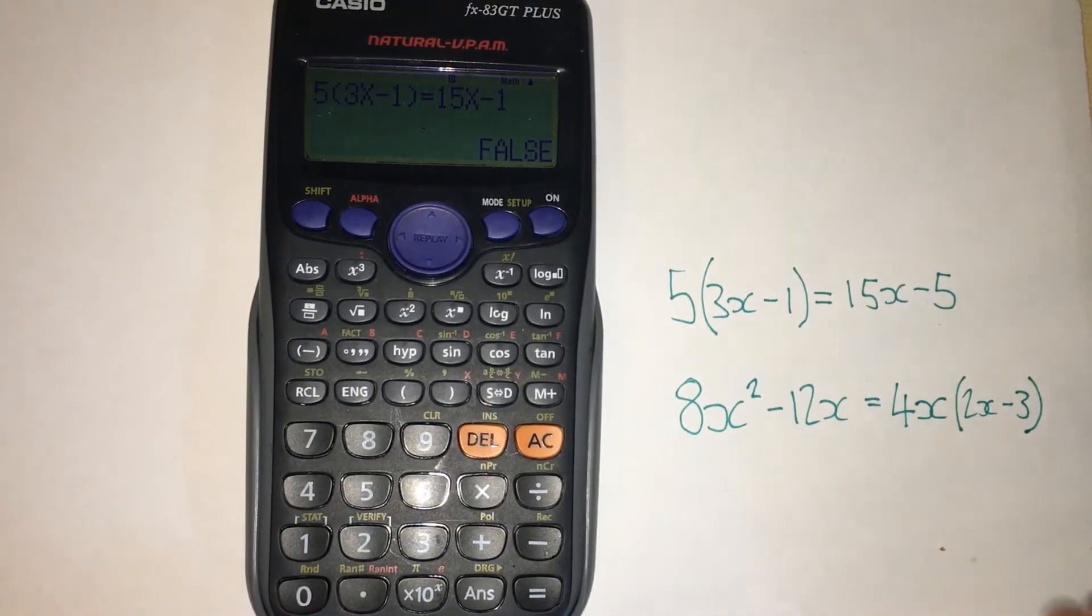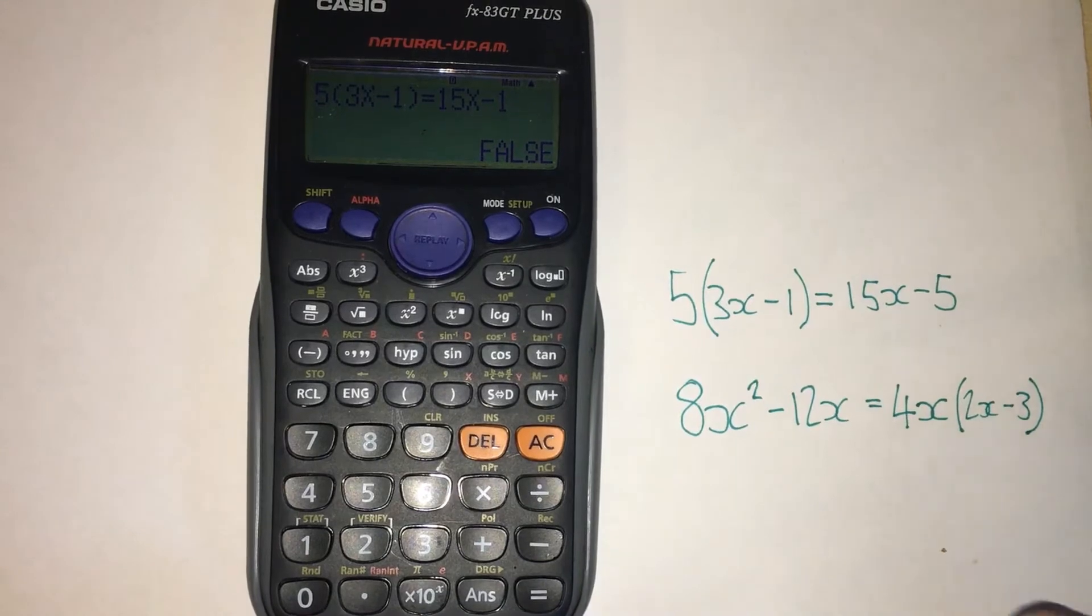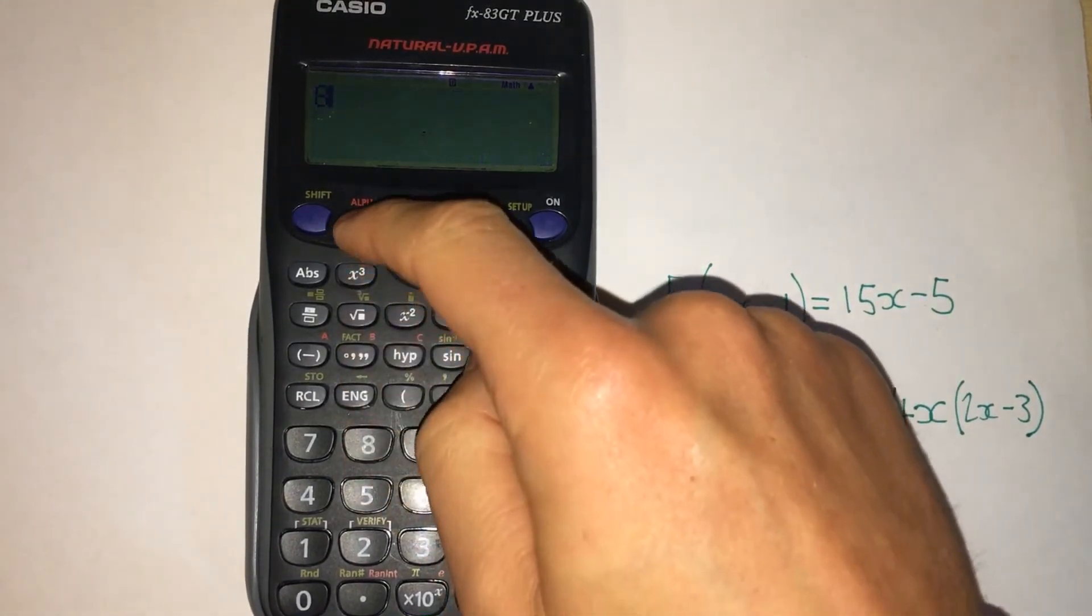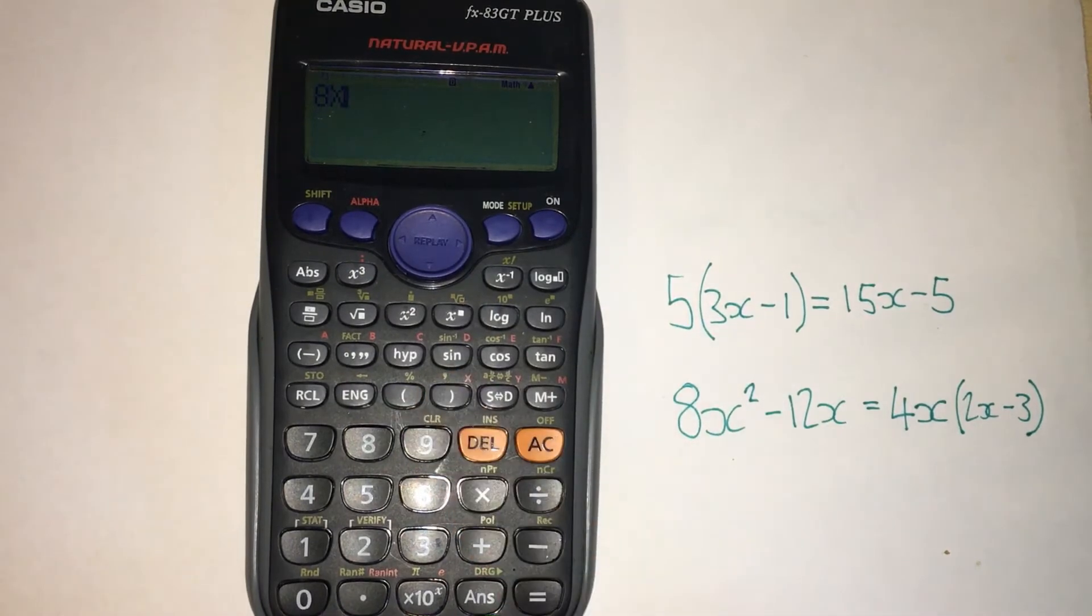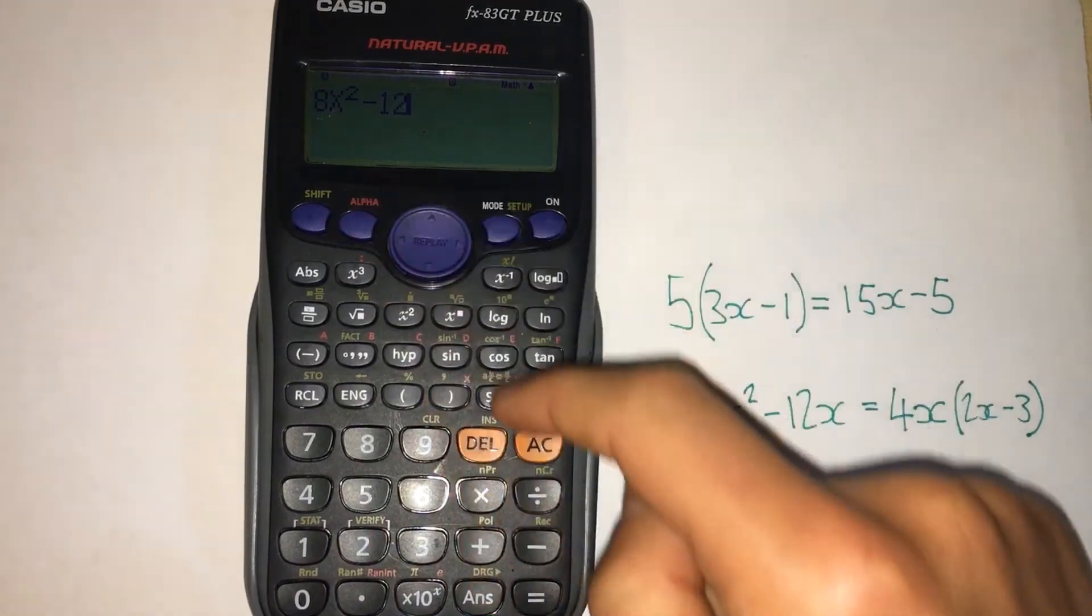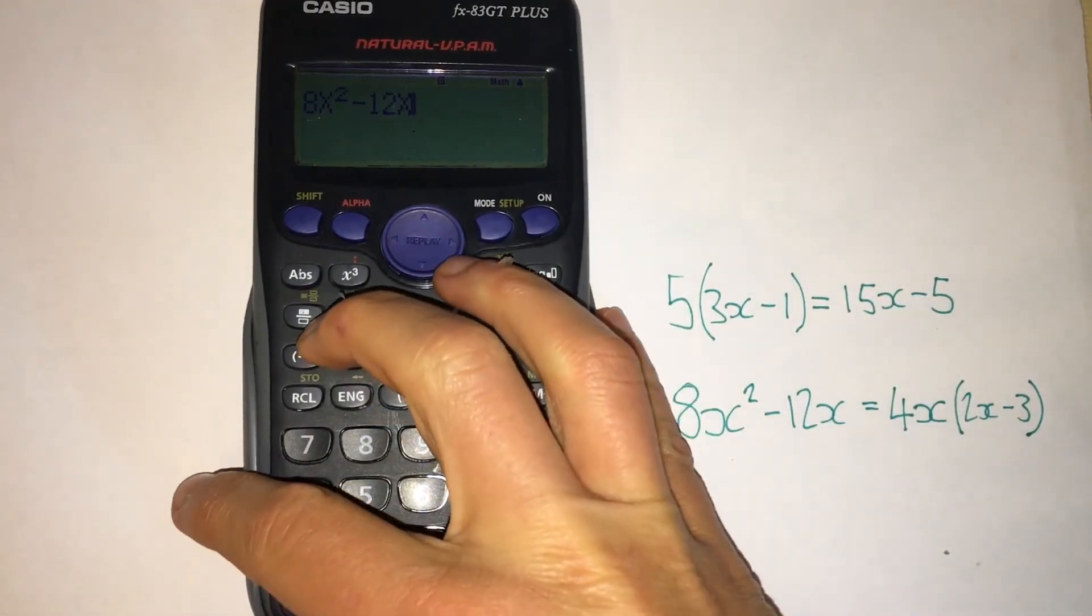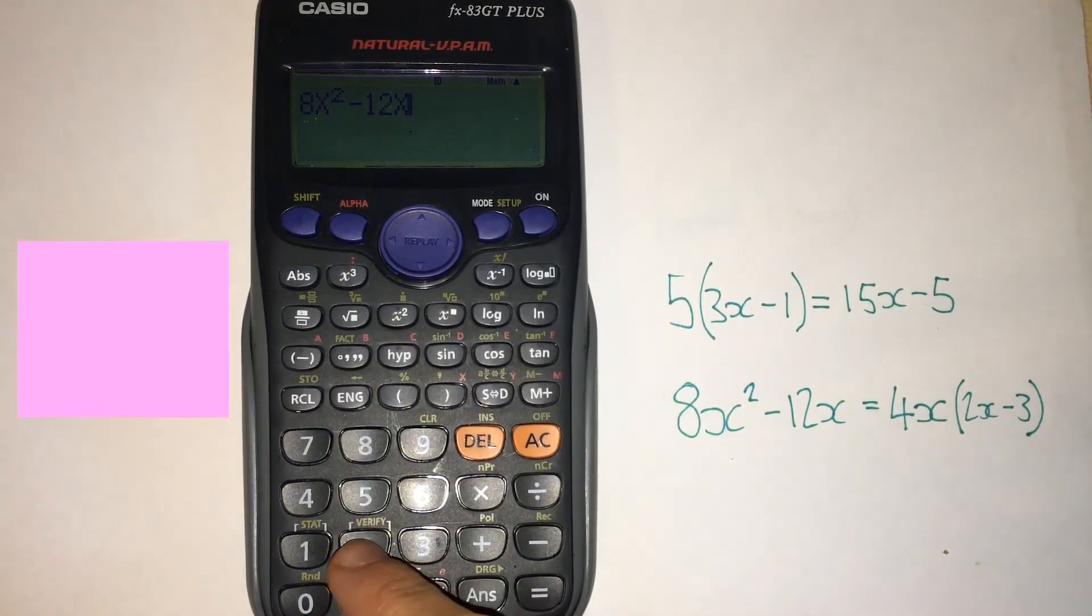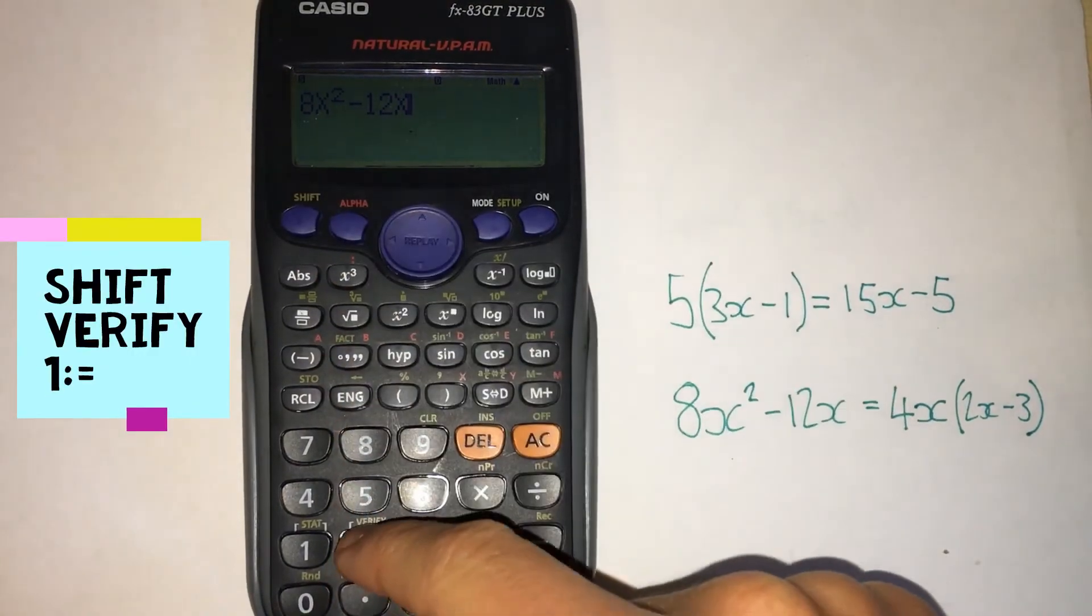There we go. We want to see if this is true, so we type it in. The left hand side: eight, going to use the alpha function again, x squared, minus twelve, alpha function with the x.